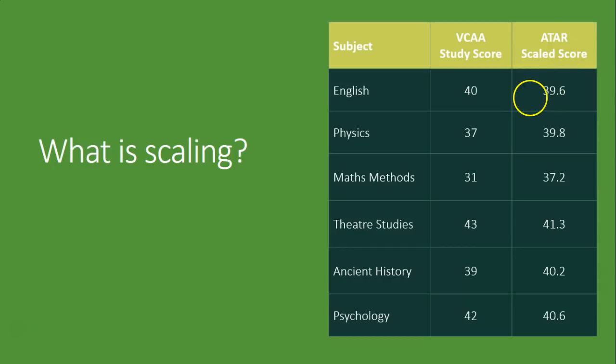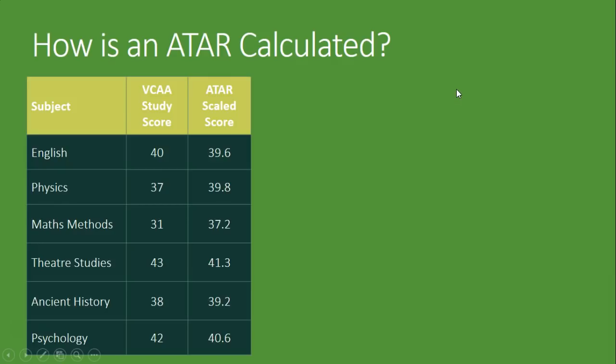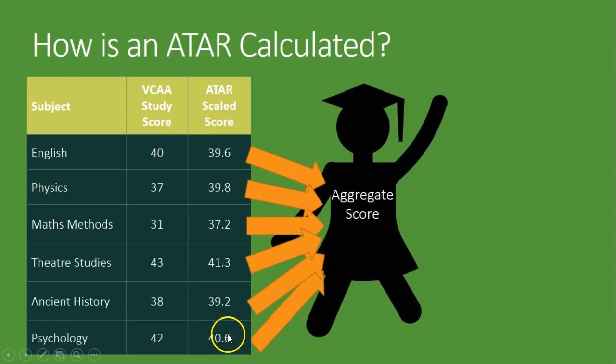Once we've got those ATAR scaled scores, all we do is add up the top four. In this case, that would be theater studies, psychology, physics, and English. English actually has to be in there regardless of whether it's in the top four. So no matter what, English is going to count in your top four. Then what we do is take ten percent of the next two best.